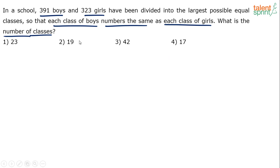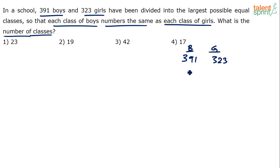For example, let's say there are 100 boys and 100 girls. We want the class size to be as large as possible — the largest possible equal classes.